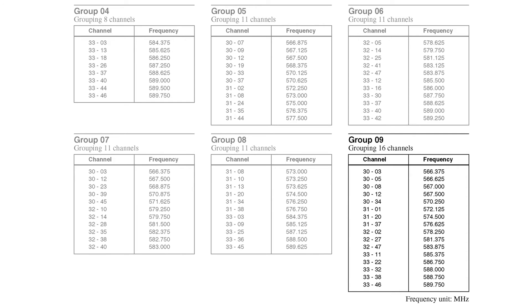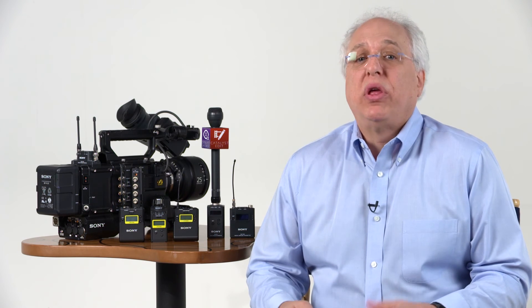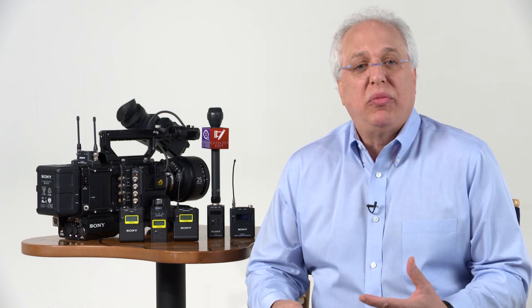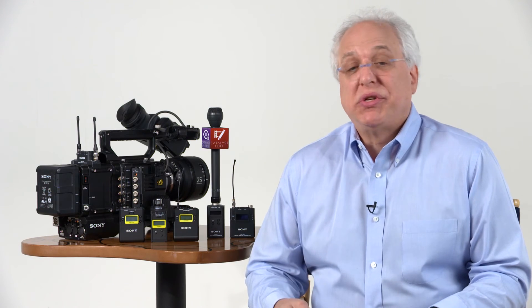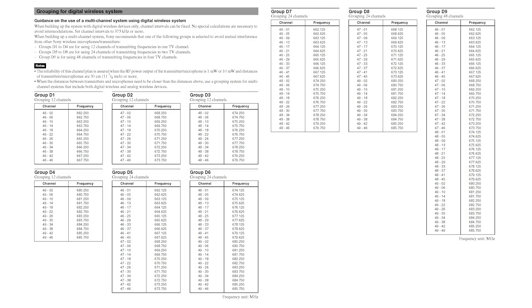By the way, these charts are for use with our UWPD series of wireless, or for when you want to use DWX in combination with UWPD systems. If you're using the DWX wireless series exclusively, you can use what are referred to as D groups — for example, D1 through D9. With the DWX series, we can fit 50% more channels inside of a given TV channel, so the number of compatible frequencies within a group is much higher.